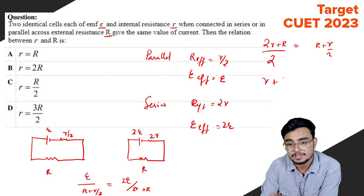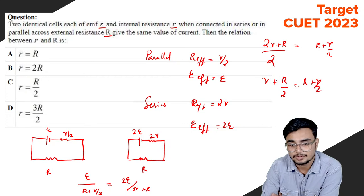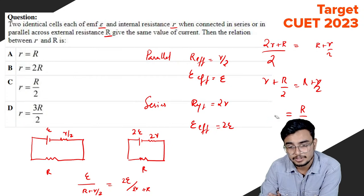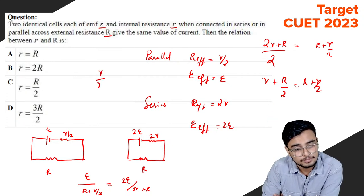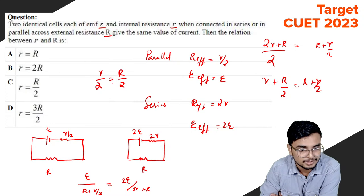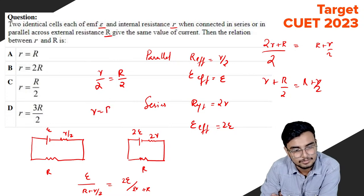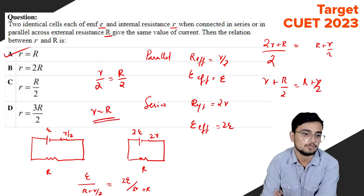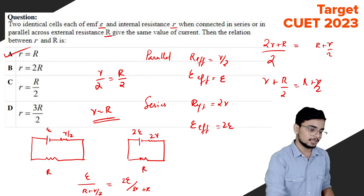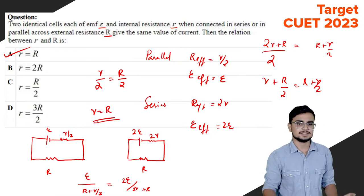Solving the equation: R plus r/2 equals R plus r/2, which simplifies to R equals r. So the correct answer is option A. R is equal to r.